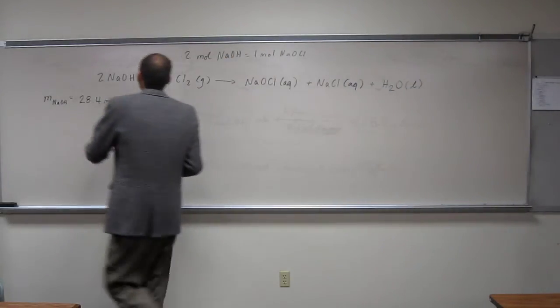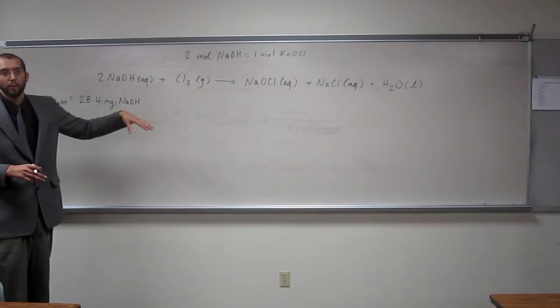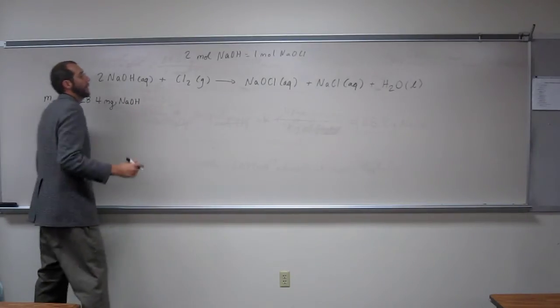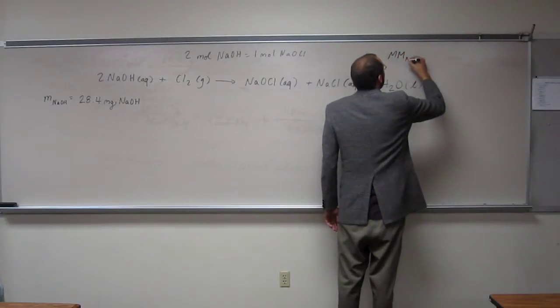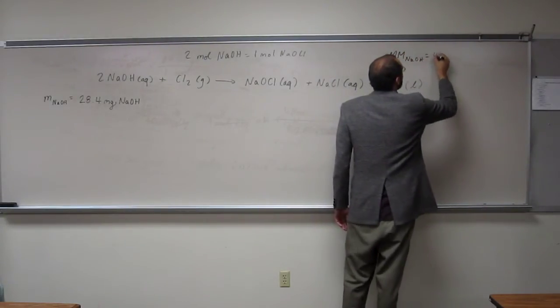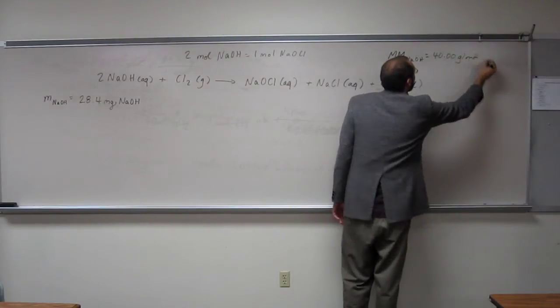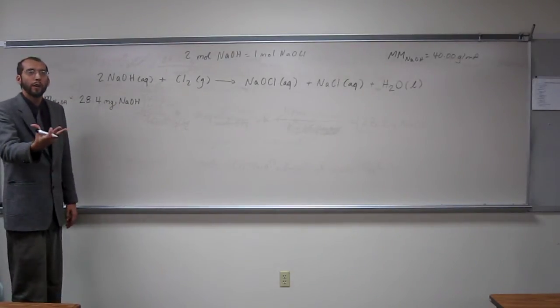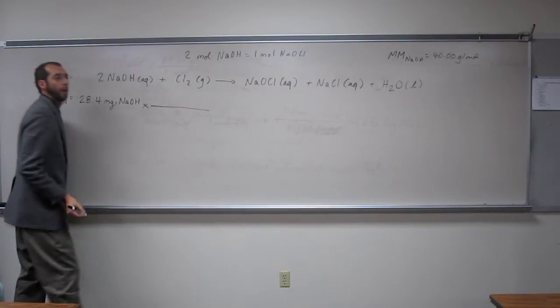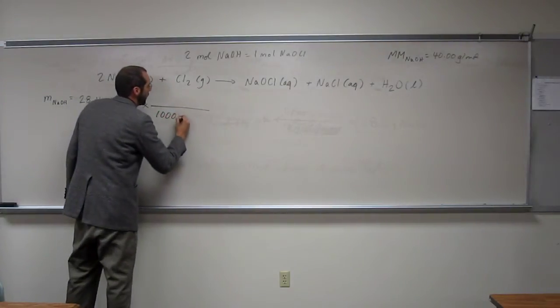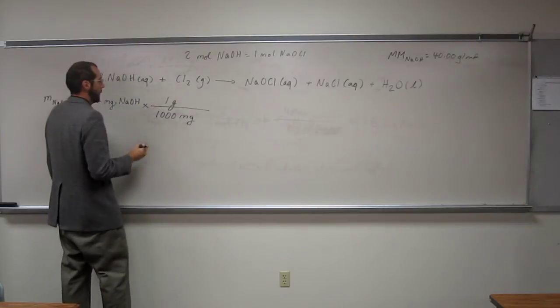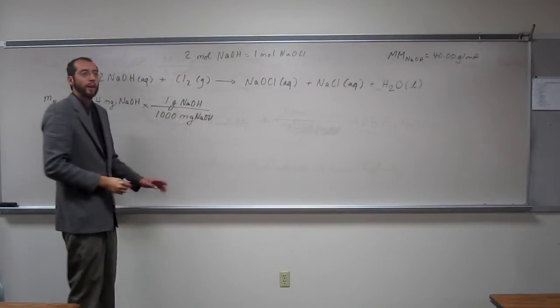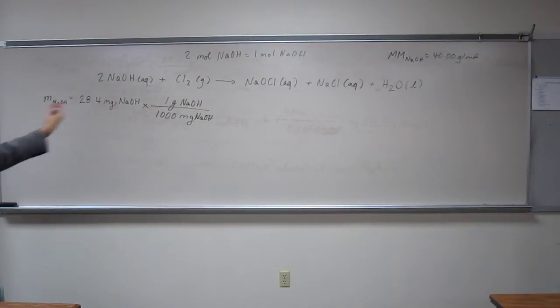But the mass that the molar mass gives us is in grams, right? So we're going to have to convert milligrams to grams prior to using the molar mass conversion. I shouldn't have erased it, but we wrote down the molar mass for sodium hydroxide last time. So that was 40.00 grams per mole. Does anybody remember the conversion factor between milligrams and grams? One thousand milligrams, I think. Yep, one thousand milligrams per gram. If you don't remember that, it's something you're supposed to remember, it's not going to be given to you.